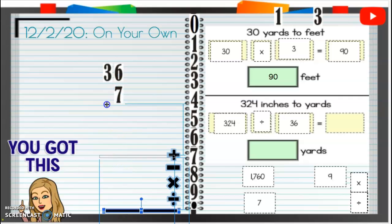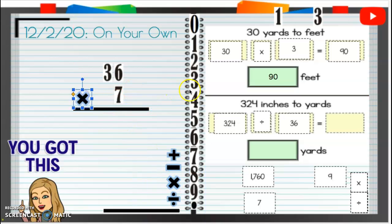So 7 times 6 is 42. Carry that 4, drop that 2. 7 times 3 is 21 plus 4. It's going to be 25. So 252. Not quite.